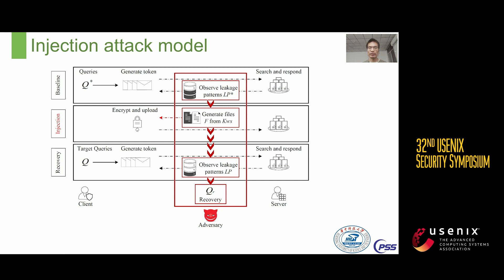In the baseline phase, the adversary observes the leakage pattern LP* of some queries, such as access pattern — representing the returned encrypted file identifiers — and search pattern, which indicates whether two queries are the same. Subsequently, during the injection phase, the adversary generates injected files each containing specified keywords based on observations from the baseline phase. The client then encrypts these files and uploads them to the server.